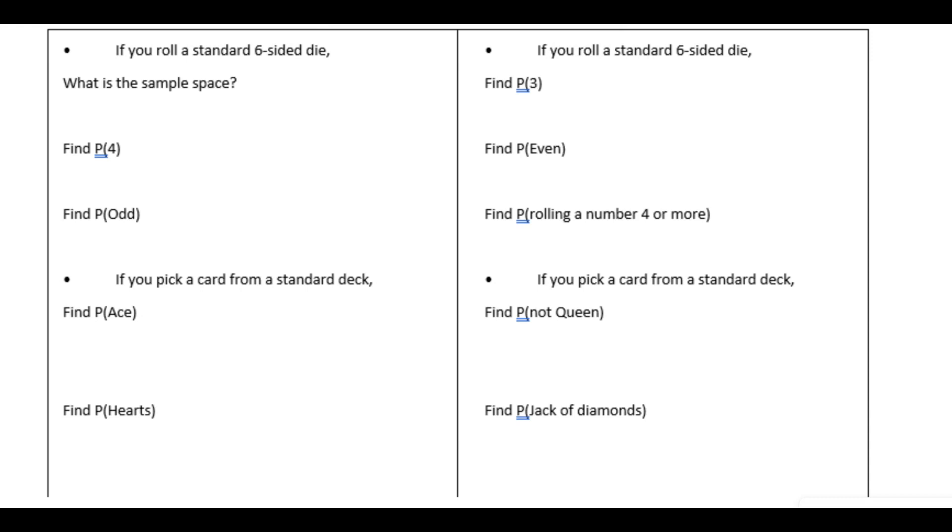Now the sample space is the set of all possibilities for this experiment of rolling a six-sided die. So it would be getting a one, a two, three, four, five, or six.